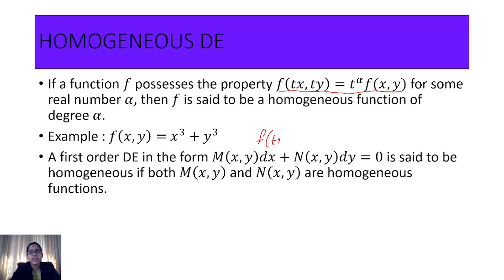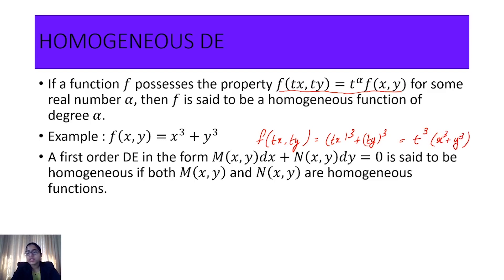To verify: f(tx, ty) = (tx)³ + (ty)³ = t³(x³ + y³) = t³ · f(x, y). So this is a homogeneous function and the degree of this homogeneous function is three.